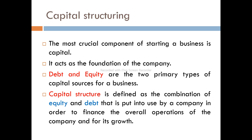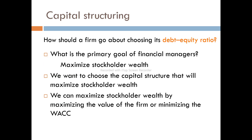Debt and equity are the two primary types of capital sources for a business. Capital structure is defined as the combination of debt and equity that companies put in place in order to finance the overall operations of the company.